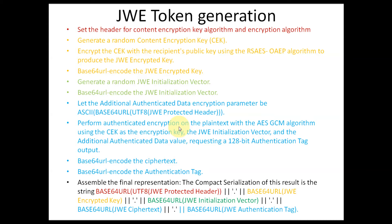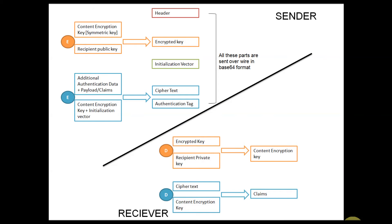As the final step, we concatenate all five parts: header, encrypted key, initialization vector, ciphertext, and authentication tag — and send it over the wire. On the receiver side, they will parse this token and extract the claims for processing.